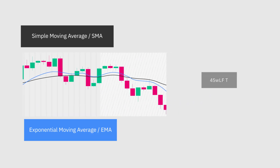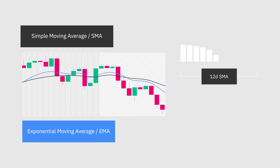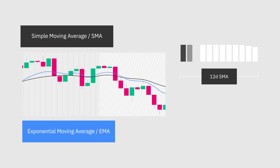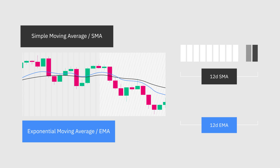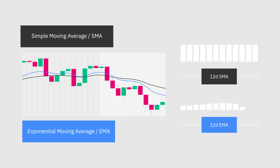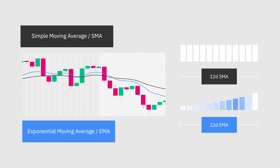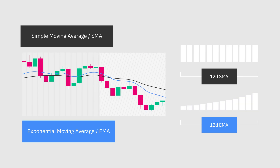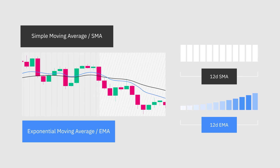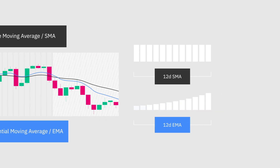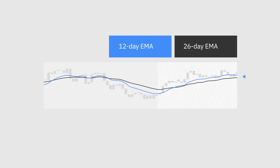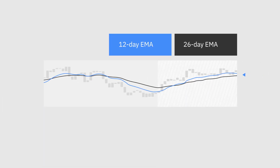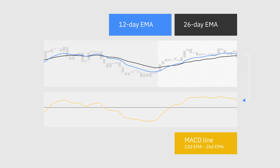While the SMA assigns equal weight to all previous data, an EMA assigns more importance to the most recent data values. The MACD indicator is calculated by subtracting two exponential moving averages to create the main MACD line.